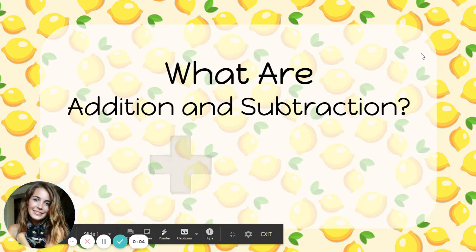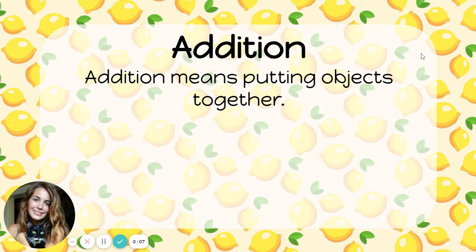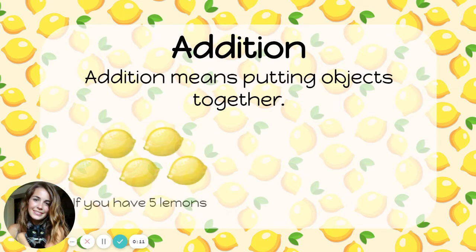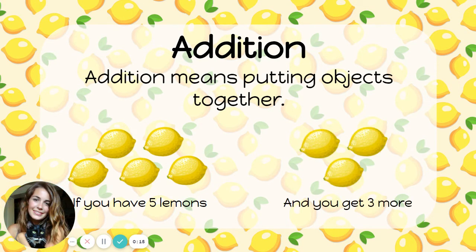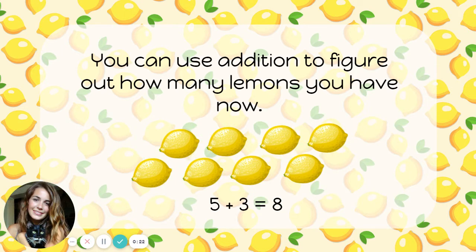What are addition and subtraction? Addition means putting objects together. Let's say you have five lemons and you get three more. You can use addition to figure out how many lemons you have now. Five plus three equals eight. When you add, you'll often see words like altogether, combined, or total.